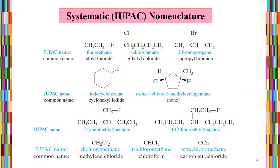The first example is fluoroethane, common name ethyl fluoride. Then 1-chlorobutane and butyl chloride, 2-bromopentane, 2-bromopropane with the common name isopropyl bromide. There are also cyclic structures. Dichloromethane has the common name methylene chloride, trichloromethane is chloroform, and tetrachloromethane is carbon tetrachloride. These are all structures with IUPAC names and common names according to their systematic nomenclature.